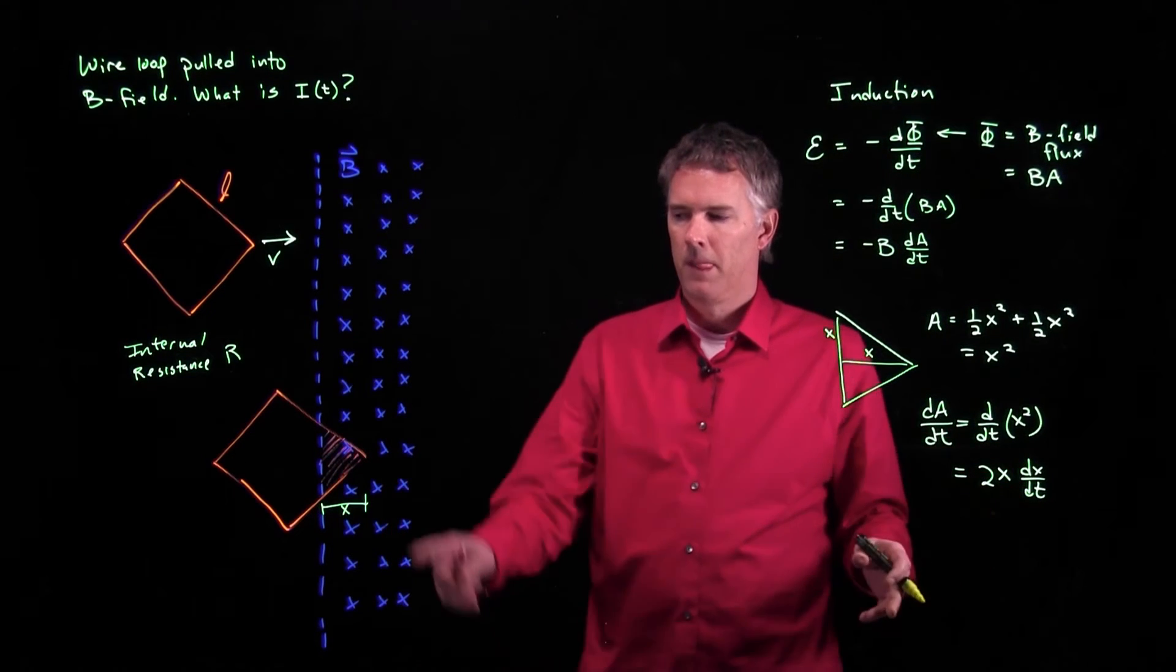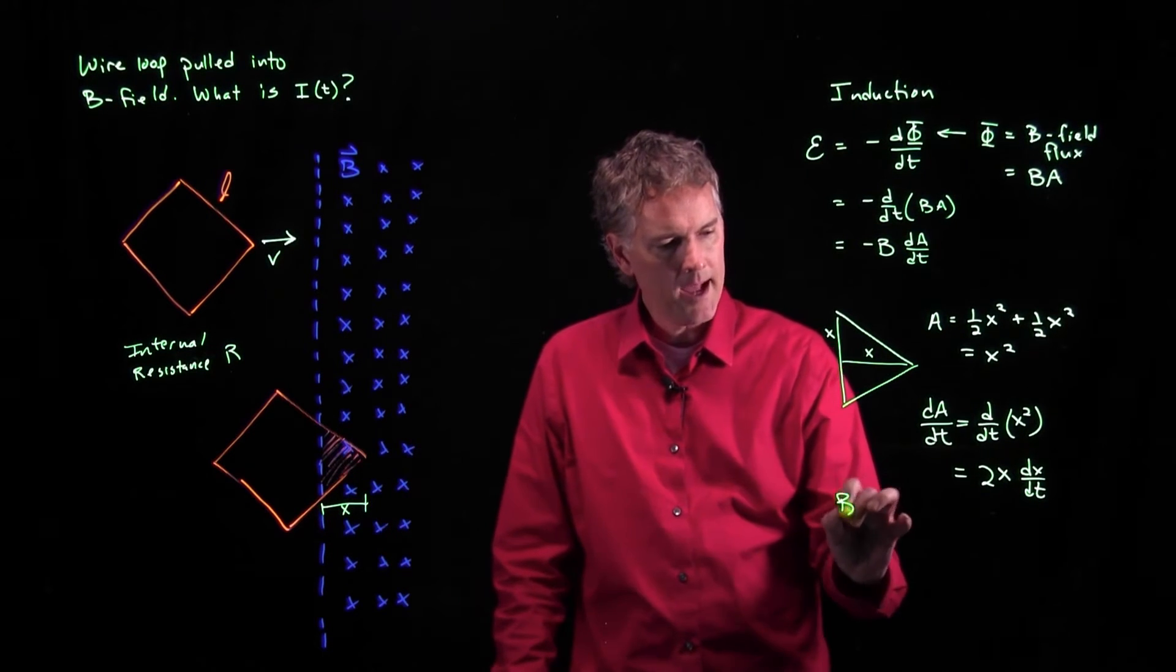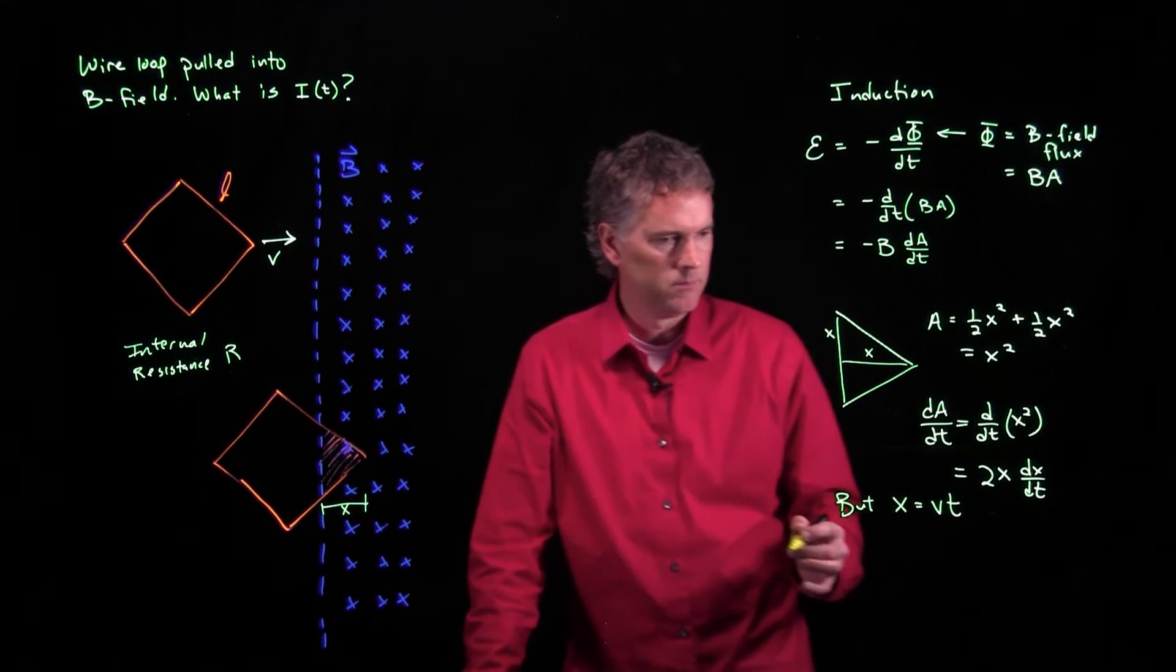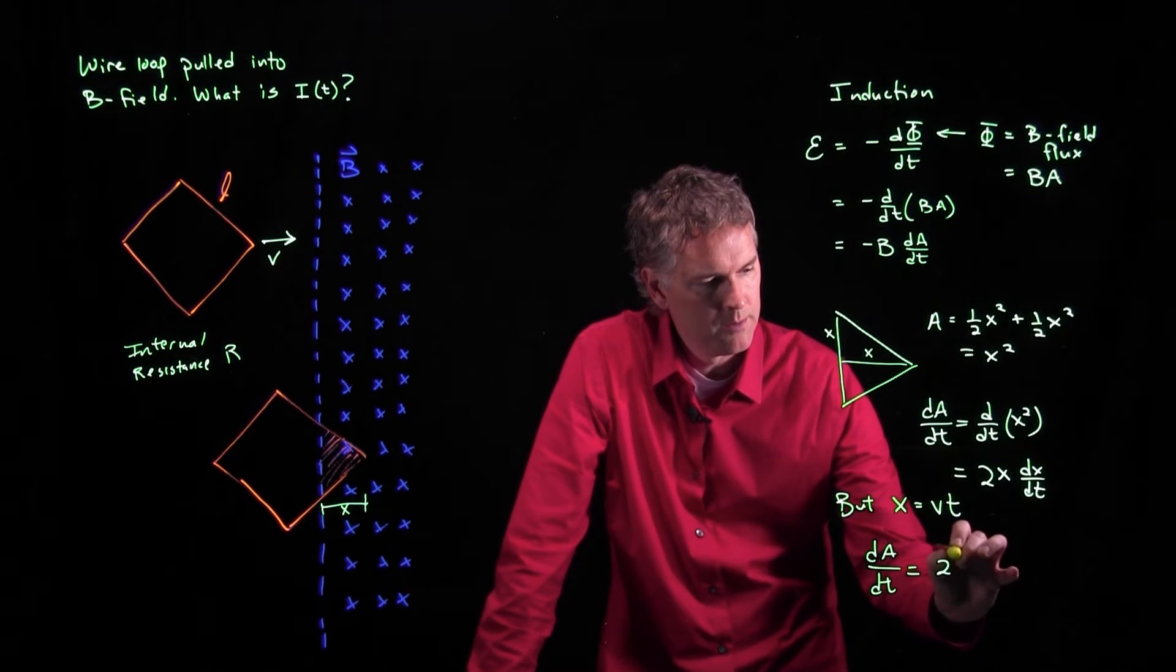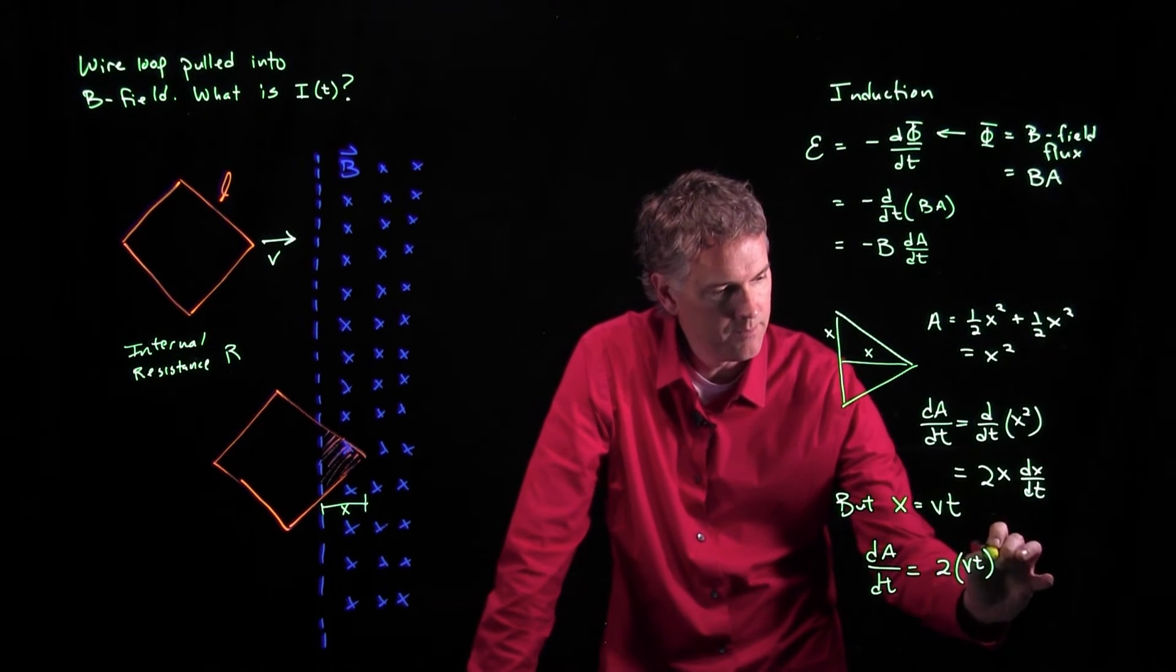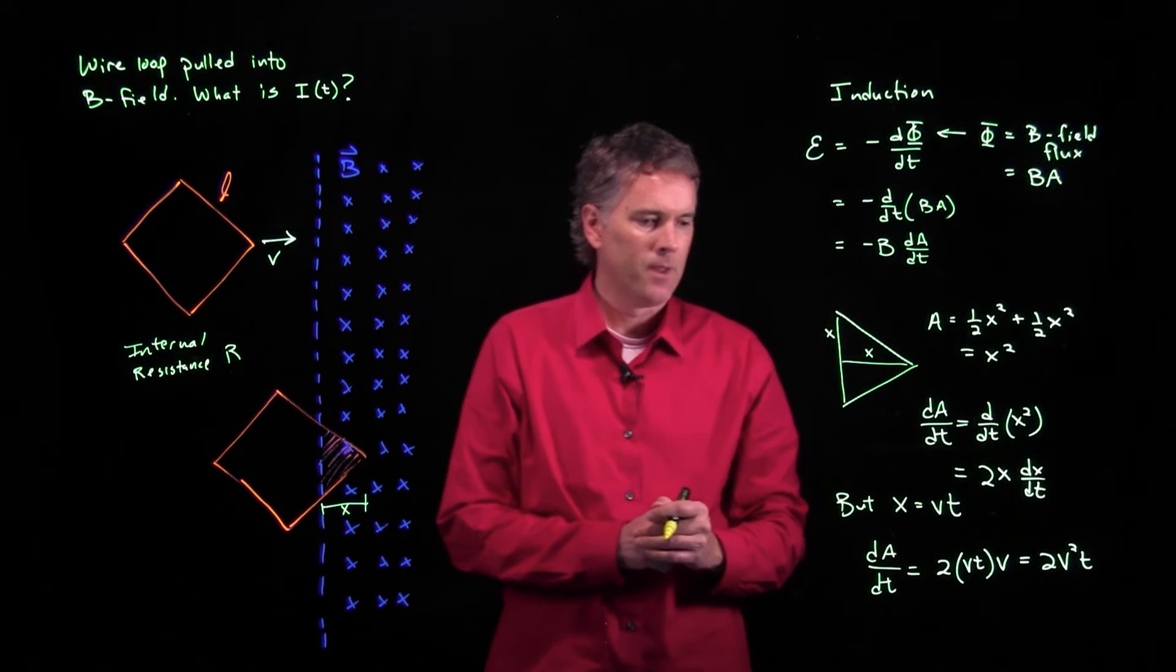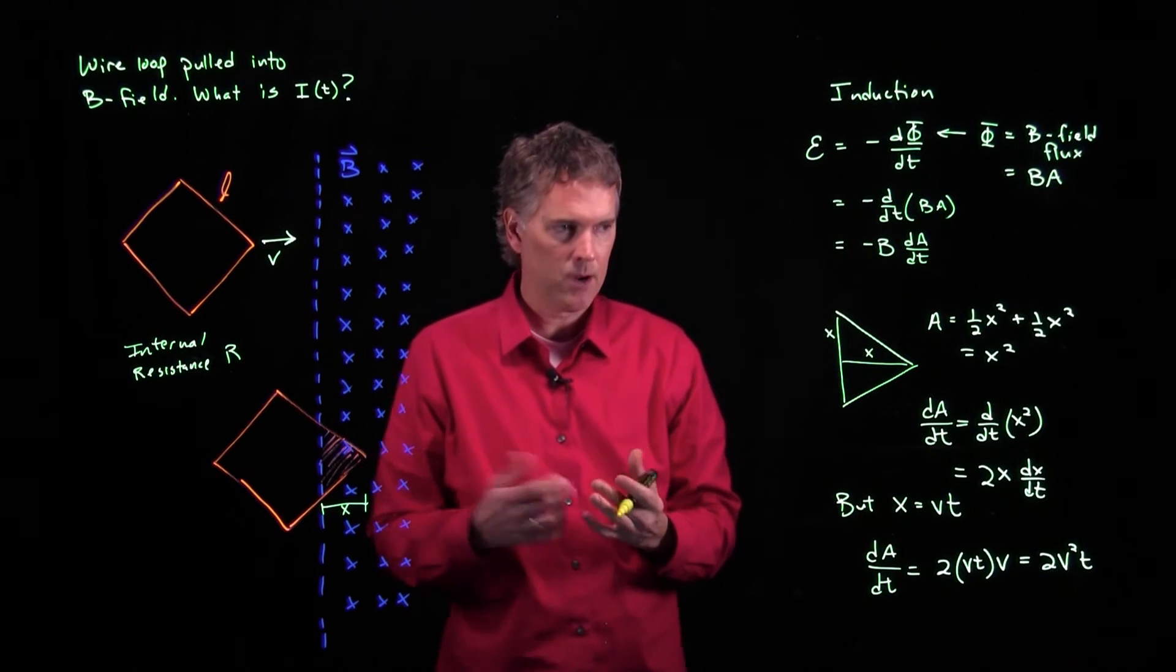But I know what all those things are. If this is the distance x, I know that x is just equal to how fast it's moving times time. So what does dA dt become? dA dt becomes 2 times x, which we said is vt times dx dt, which is just v. And so what does this thing become? It becomes 2v squared times t. That looks pretty cool.